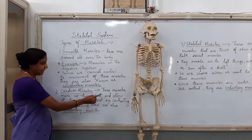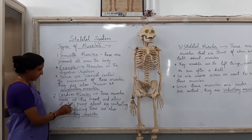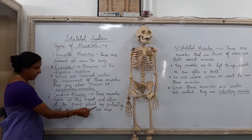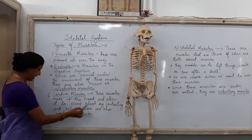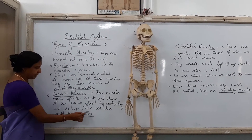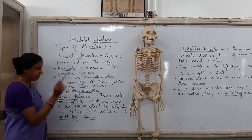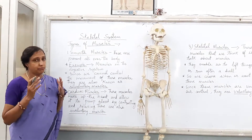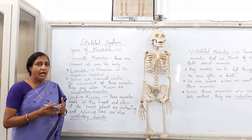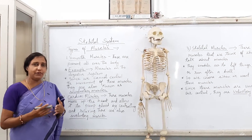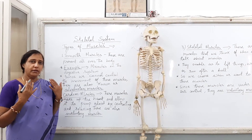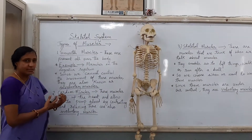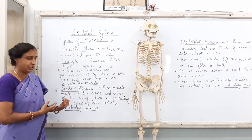Next we move on to the type of muscle called cardiac muscles. These muscles make up the heart and allow it to pump blood by contracting and relaxing. These are also involuntary muscles. As you know children, your heart is pumping all 24 hours, and without any effort you are working and living your life with the help of this muscle, since it is helping your heart to function.